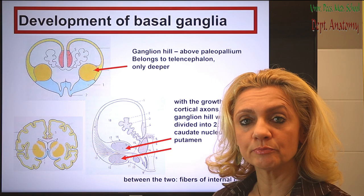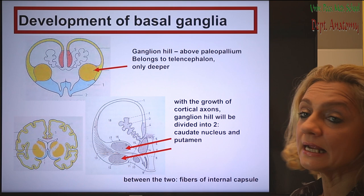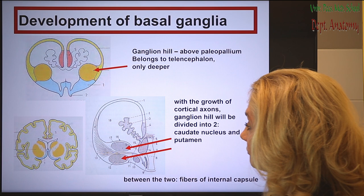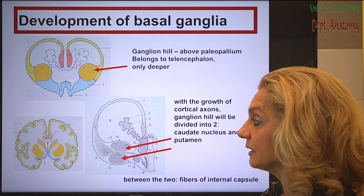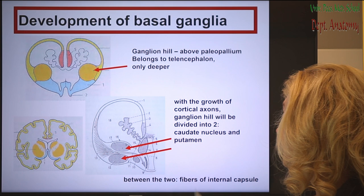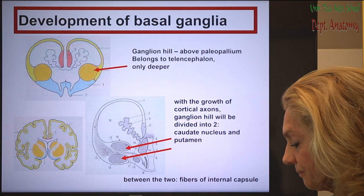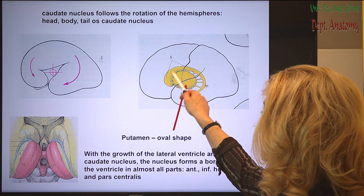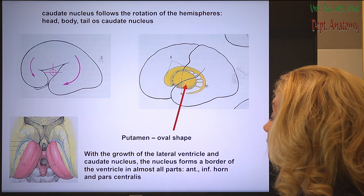Regarding development, here you can see the telencephalon during development, indicated in yellow. There is a deep ganglionic eminence appearing. The axons growing from the developing neurons cut or divide this ganglionic eminence into two parts. This will become the caudate nucleus and the putamen, and the descending fibers will form the internal capsule. The caudate nucleus follows the C-shaped rotation of the hemispheres, which is why it has this shape with the head, body, and tail.